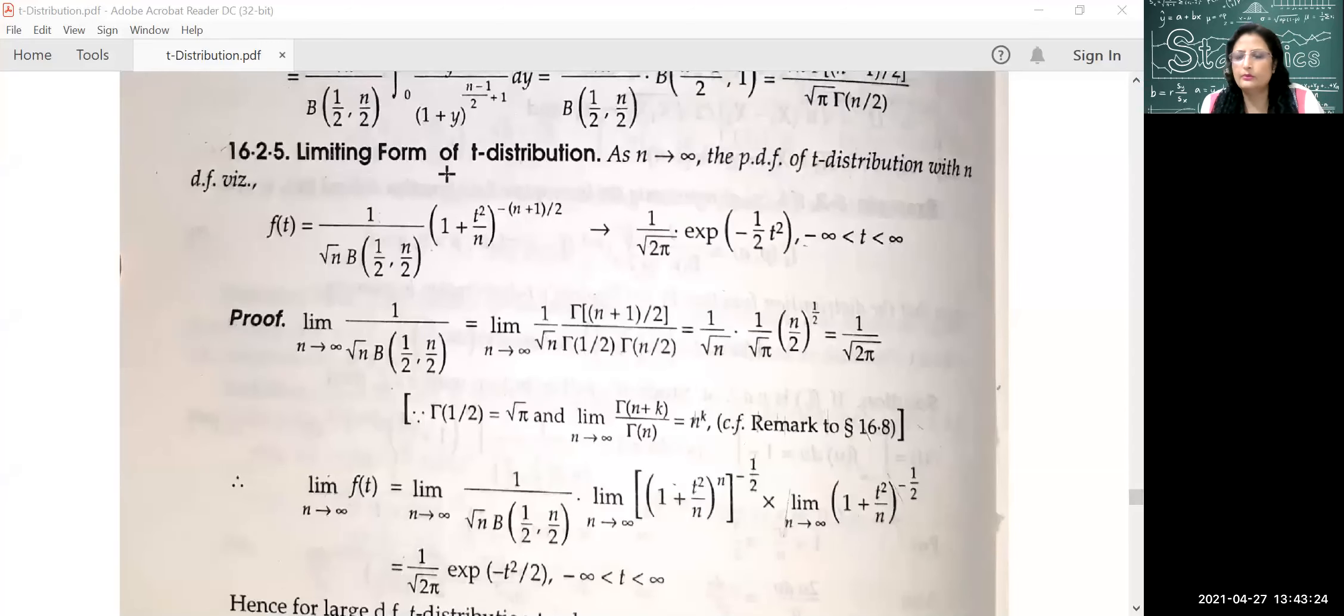Now we will continue with the limiting form of t-distribution. What does it mean? Whenever the degrees of freedom goes indefinitely large, then what will be the PDF of t-distribution and what form will the PDF of t-distribution take?